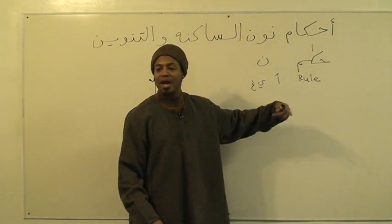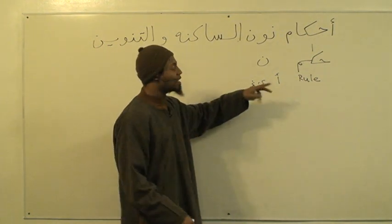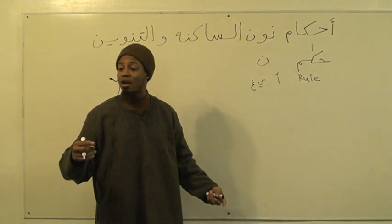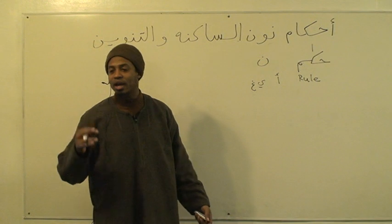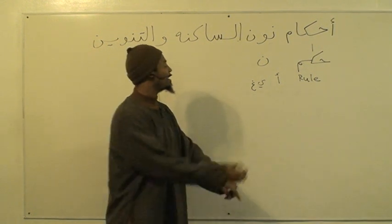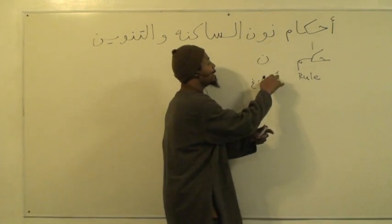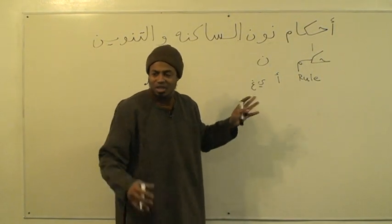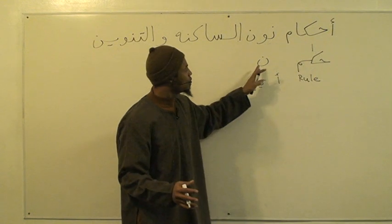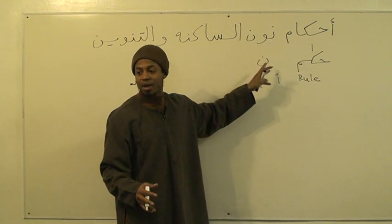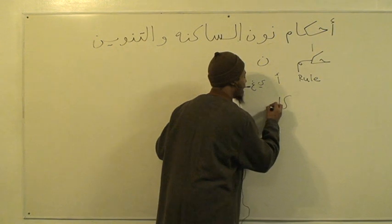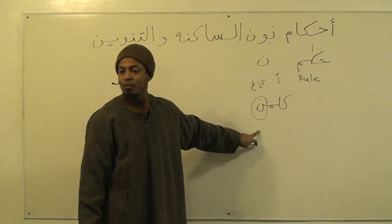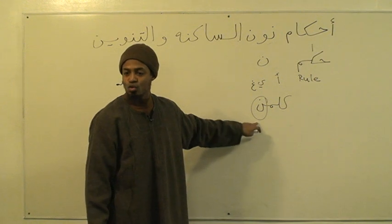If you do alif, ba, ta, tha, jim, ha, kha, dhal, ra, sin, sheen, sad, tad, ayin, ghayn, fa, qaf, kaf, lam, noon, ha, wa, ya — then it ends off with ya. The important thing is that noon is a well-known letter of the alphabet. It comes from the word kalman — it's the last letter in that when we do the abjadiyah.